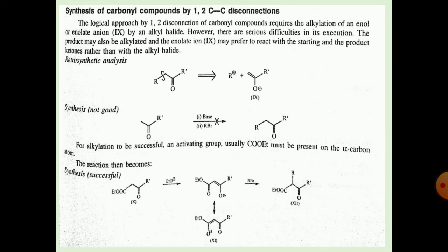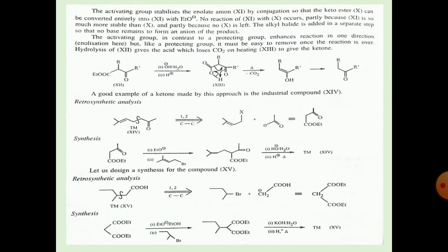The reaction becomes successful as follows: an ester group (EtOC=O) and a ketone group (OEt) are present. Attack occurs at the ketone group to form the enolate, and then the enolate attacks the R group while Br is lost, forming the adduct. The activating group stabilizes the enolate anion through conjugation, so the keto-ester can be fully converted to the enolate with EtONa. No O-alkylation occurs, partly because the enolate is more stable, and the alkyl halide is added in a separate step so that no base remains to form the anion of the product.